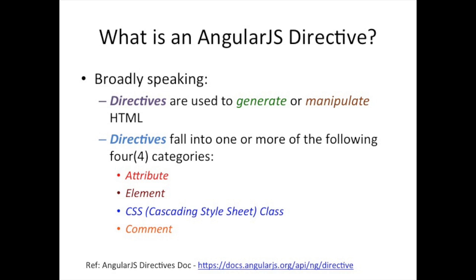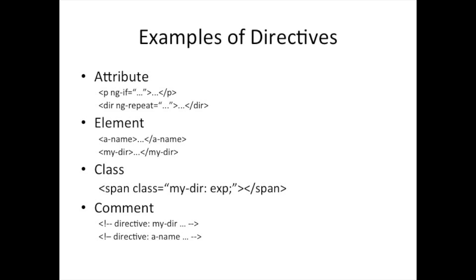Let's look at these four categories and what they look like when using a directive. If you have a P element and you want to use the ng-if directive on it, you use it as an attribute — just like any other attribute such as id or class. There are other directives too; another example is the ng-repeat directive being used on the dir tag or element.